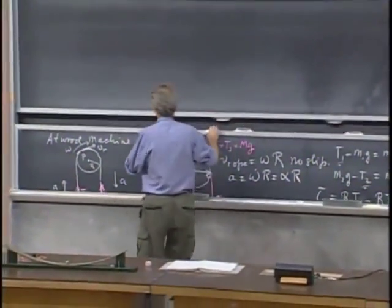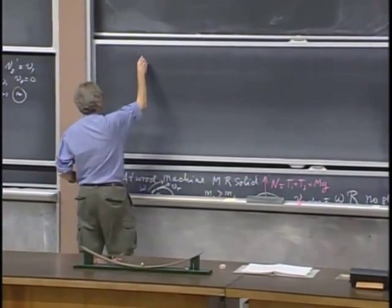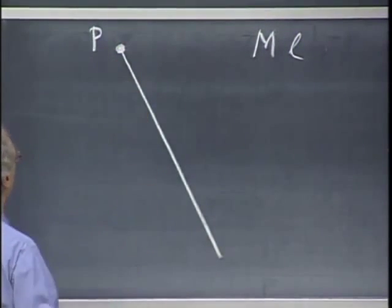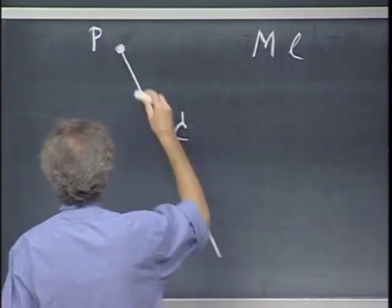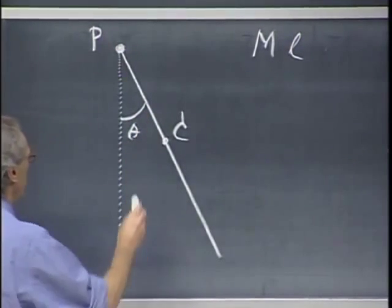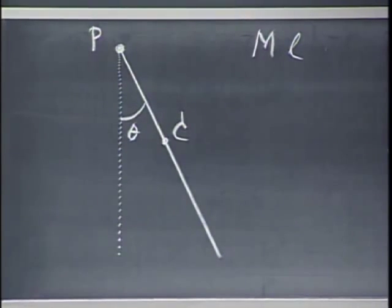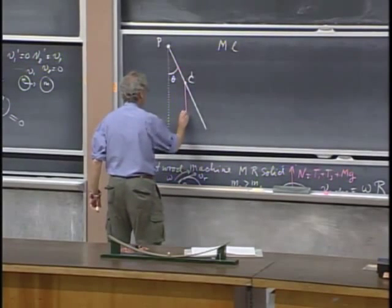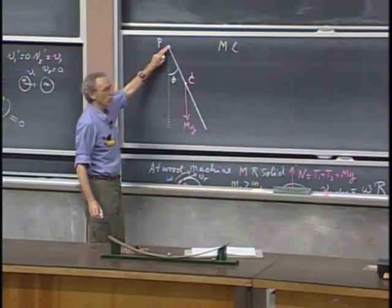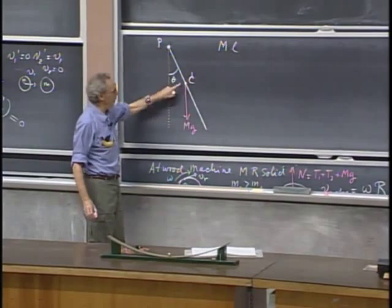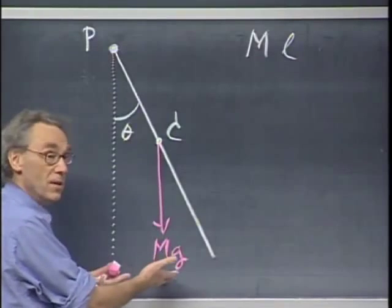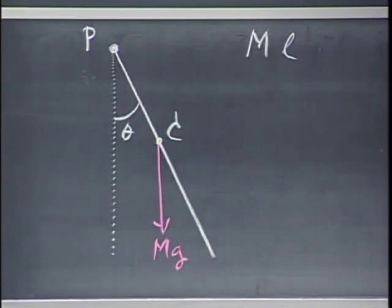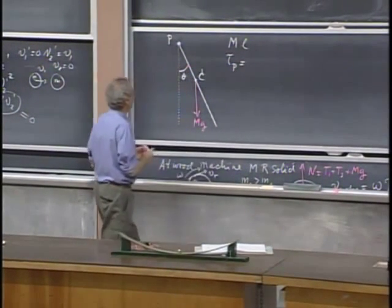Let's do another problem: simple harmonic oscillation of a physical pendulum. I have a rod of mass M and length L, rotating about an axis perpendicular to the blackboard without friction. Here is the center of the rod, and let the angle be theta. There is a torque relative to point P. I know there is a force Mg at the center. Since I'm taking the torque relative to point P, I don't worry about the force through P, but there has to be one — otherwise this ruler would accelerate straight down with g.